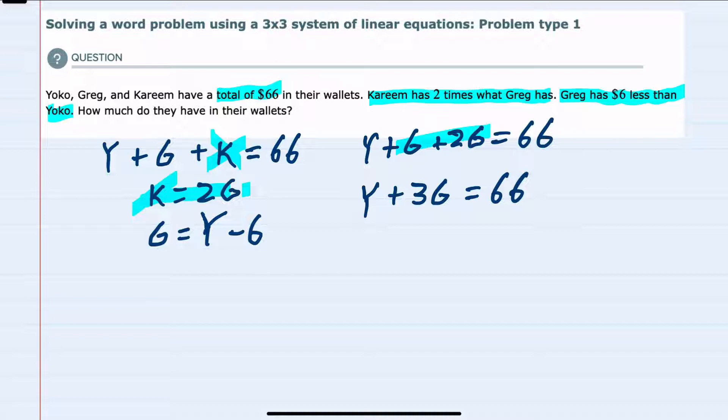We've got 1G plus 2G, so we can add these G values and simplify that Y plus 3G equals 66. And now I see that the last equation has already solved for G. I can make that substitution into this new equation.